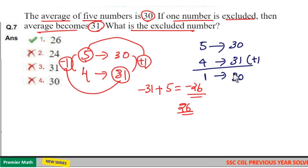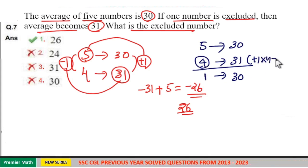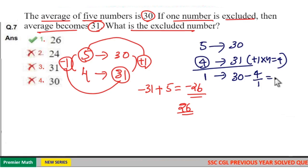And this one average increment is for this four numbers, so 1 into 4 is 4. This is the total increment, so this total increment we should subtract it from this common average for the remaining number. So 30 minus 4 is equal to 26.